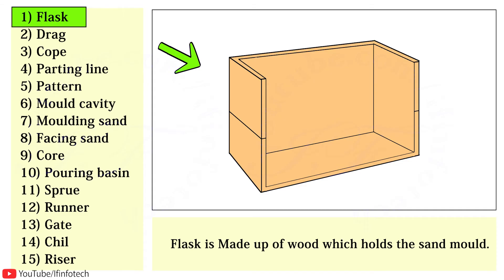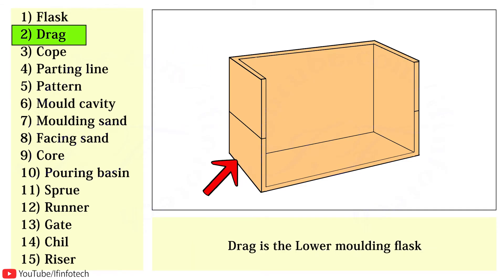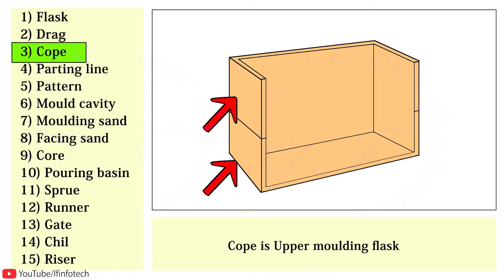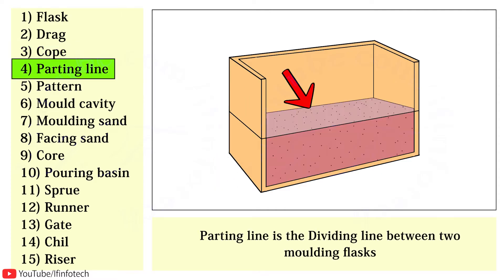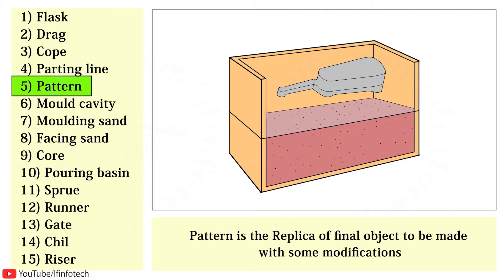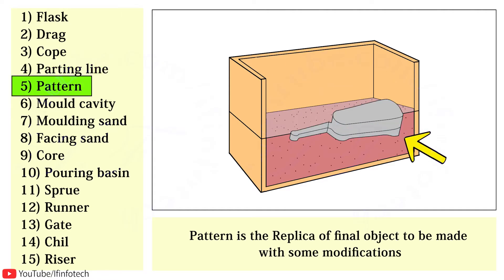The gating system consists of a flask made up of wood which holds the sand mould. The drag is the lower moulding flask and the cope is the upper moulding flask. The parting line is the dividing line between the two moulding flasks, and the pattern is the replica of the final object to be made, with some modifications.